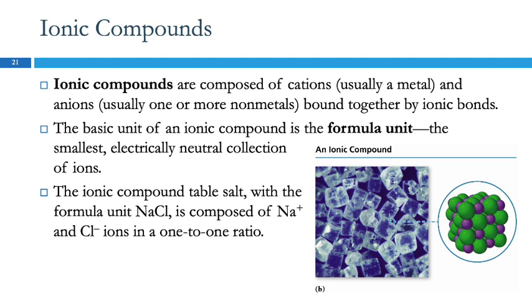Ionic compounds have cations and anions in them. The cations are usually a metal, almost always in Chem 1A. And the anions are usually one or more nonmetals. These ions are stuck together, connected by ionic bonds. Ionic compounds do not have molecules. And so we can't really talk about a molecular formula for an ionic compound because it doesn't have a molecule.